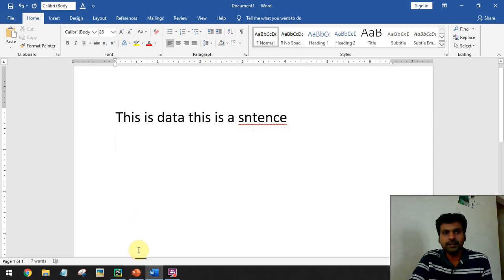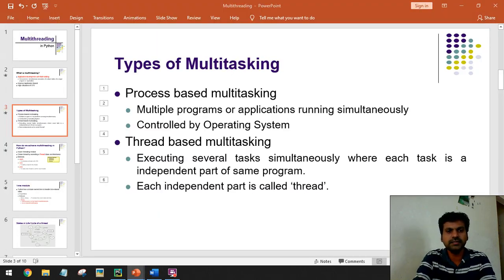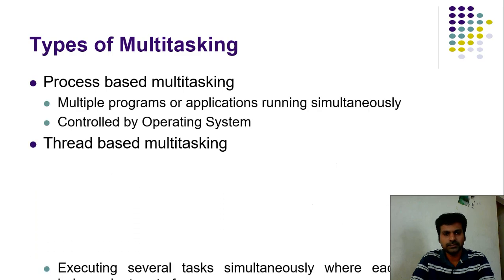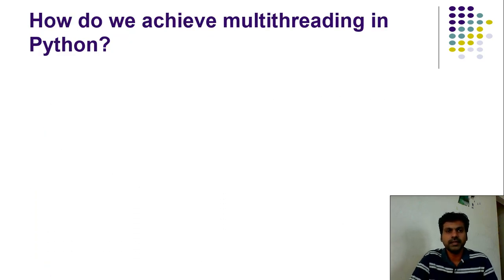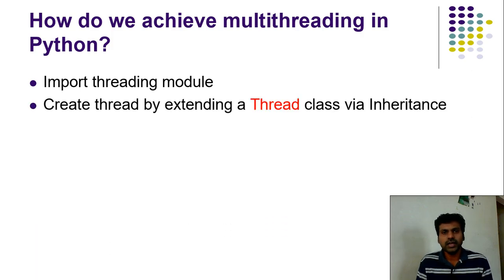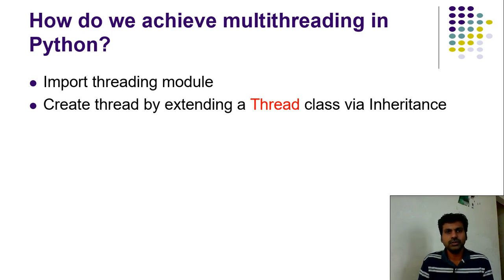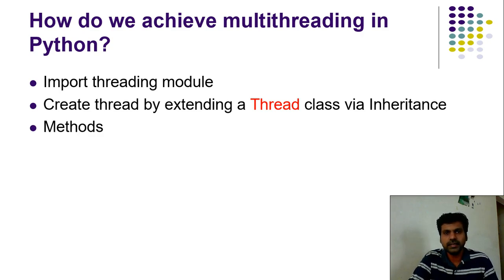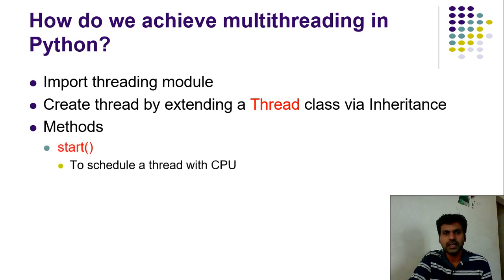This thread-based multitasking we can achieve in Python programming. To create a multi-threading application, first you need to import the threading module. In the threading module you can find a class called Thread. Using the Thread class we can create a thread. For that we have to use inheritance - you have to extend the Thread class, which provides a set of methods to manage the whole life cycle of a thread.